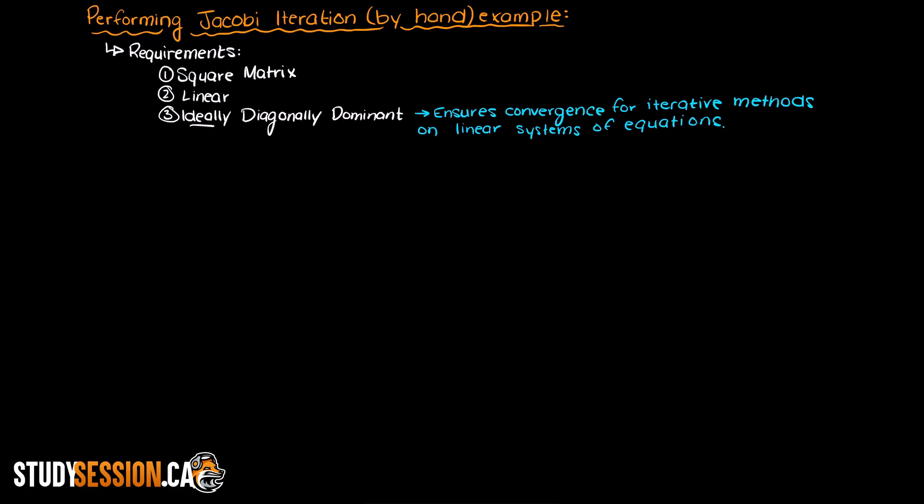If our matrix is not diagonally dominant it doesn't mean that our matrix won't converge, it just means that either the matrix has no unique solution at which point it won't converge, or we need a better starting guess for our variables so that the matrix will converge.